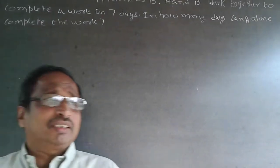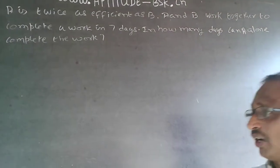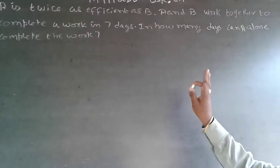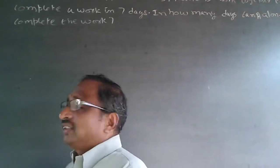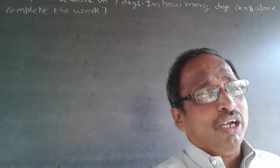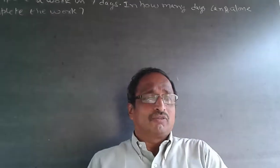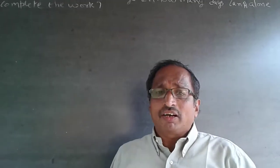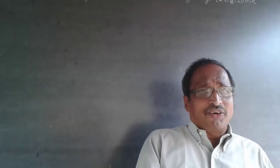A can do the work in some number of days — that is what is being asked. When we talk about time and work, always convert it as work done in a single unit. If days are given, convert how much you can do in one day. If minutes are given, find out what you can do in one minute. If hours are given, convert what you can do in one hour. Always convert as work done in a single unit.